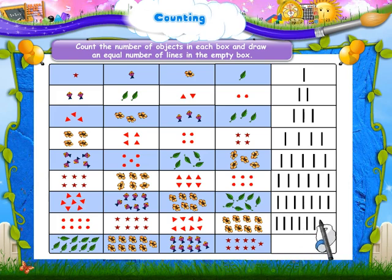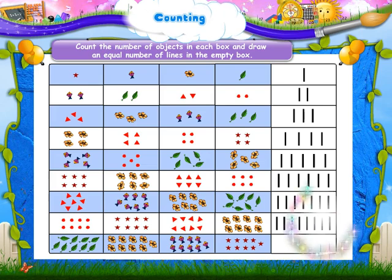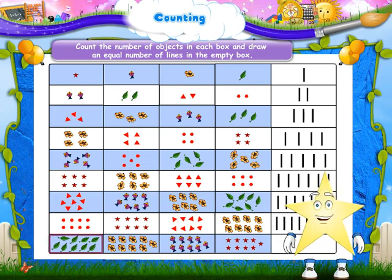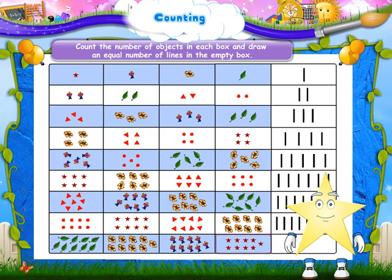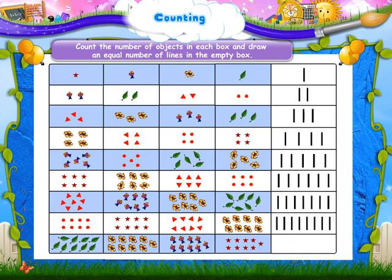Nine flowers. Nine leaves. Nine flowers. Nine kites. Nine stars. Draw nine lines.